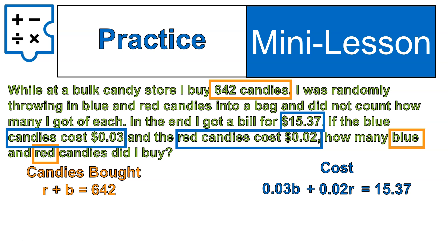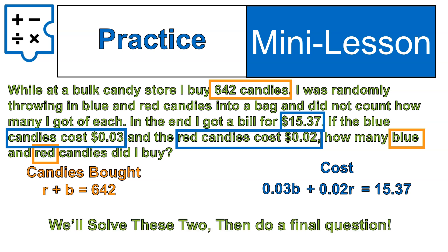That's the equation you would get. If you switch the terms around — like blue plus red equals 642, or if you had the 0.02R first and the 0.03B second — that's absolutely fine, as long as they're added together to give you $15.37. Now we're going to go back and actually solve those two equations, and then do a third and final question where we identify the equations and solve all at one time.